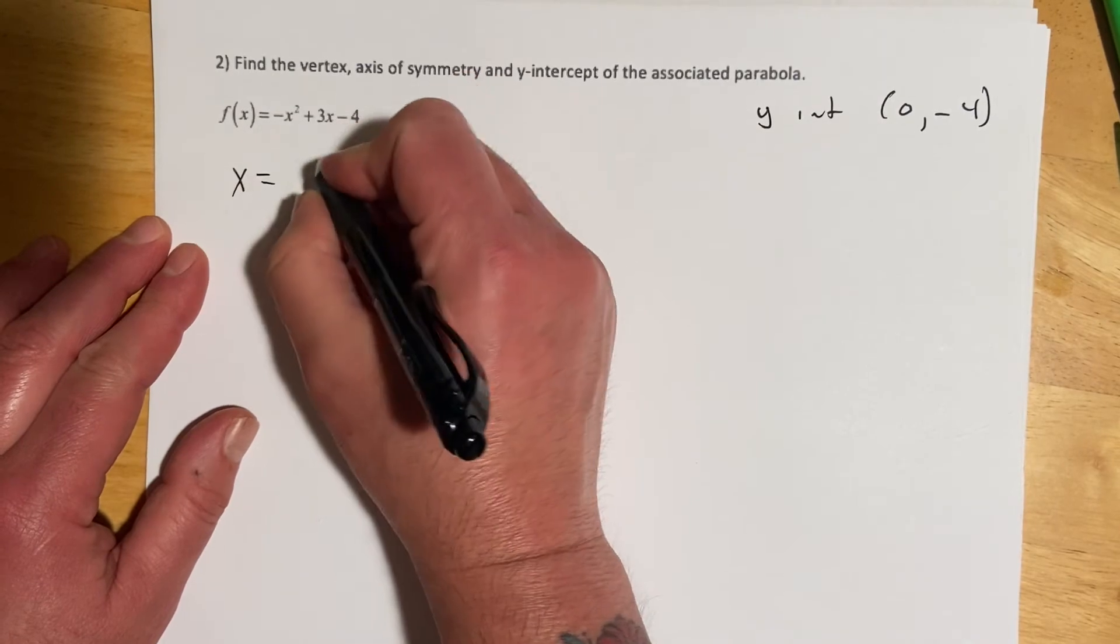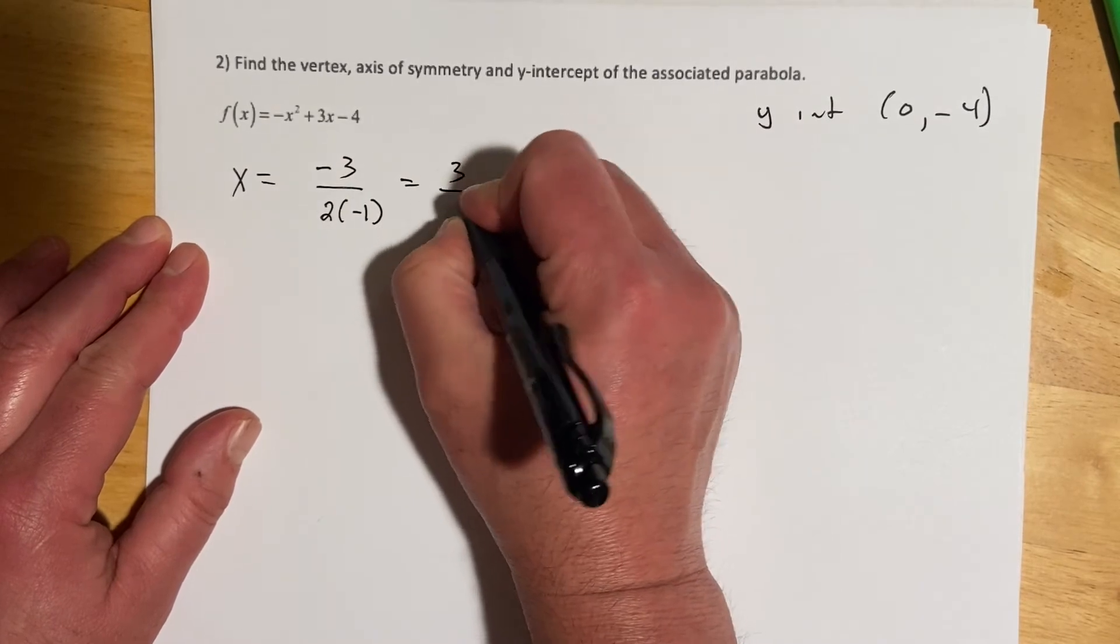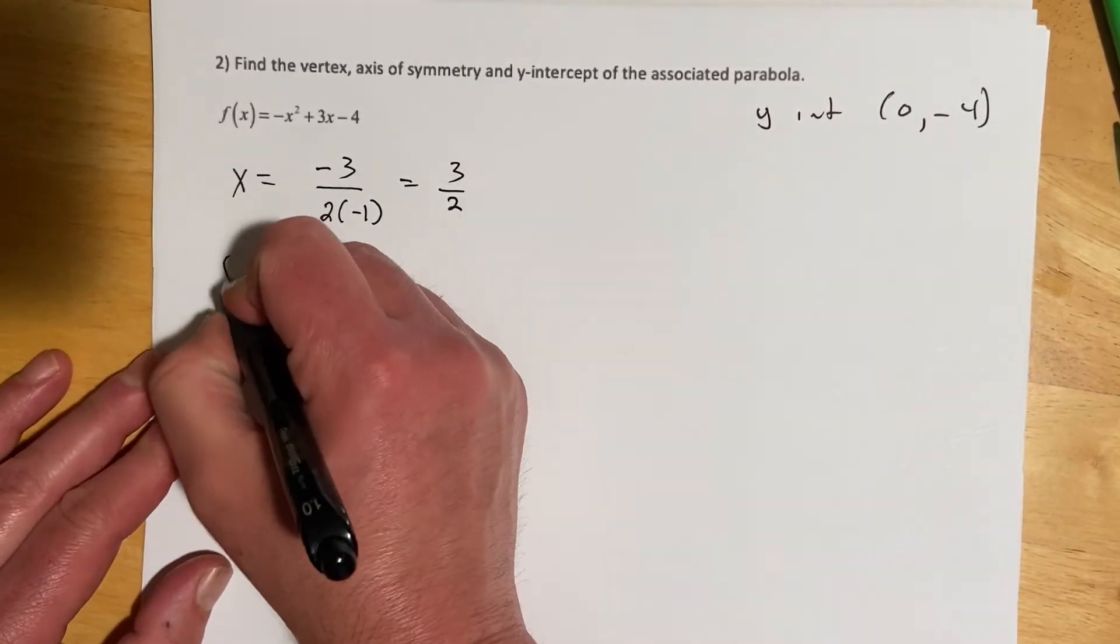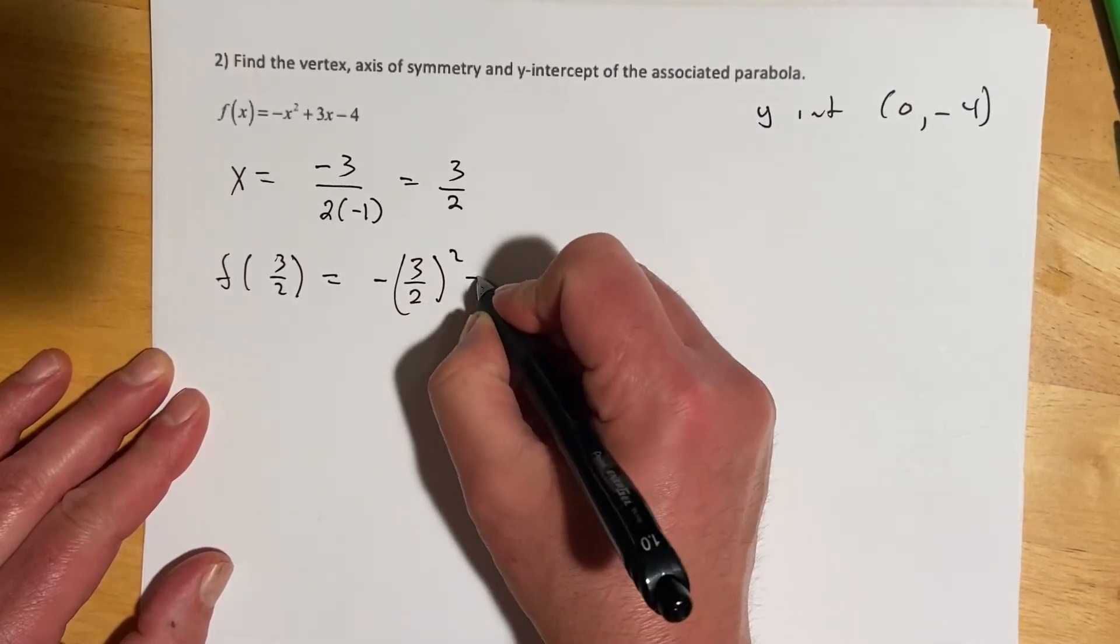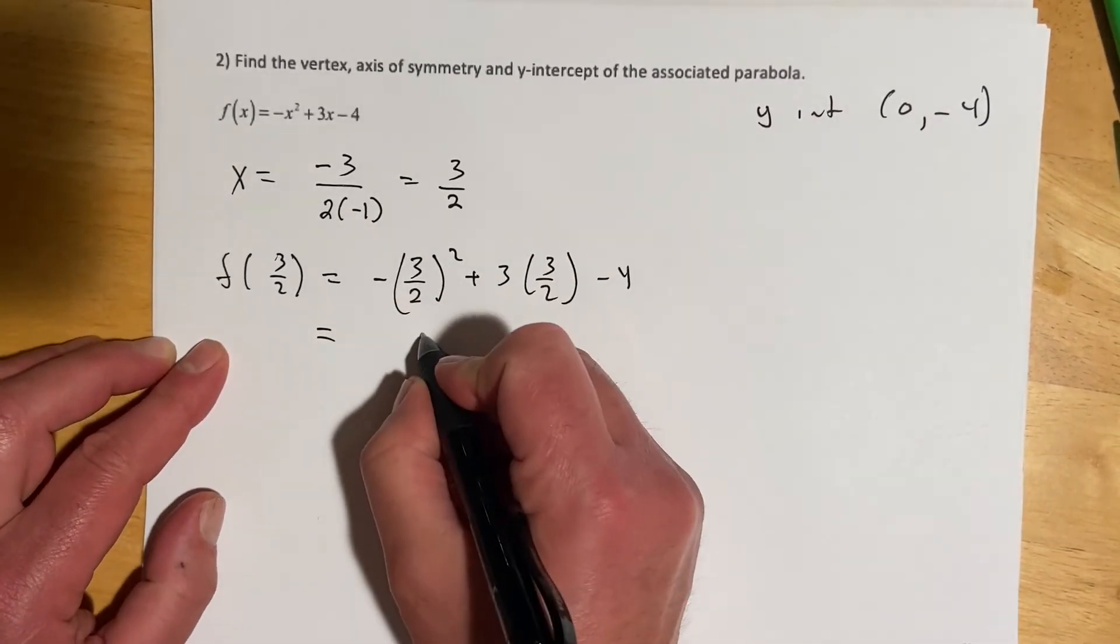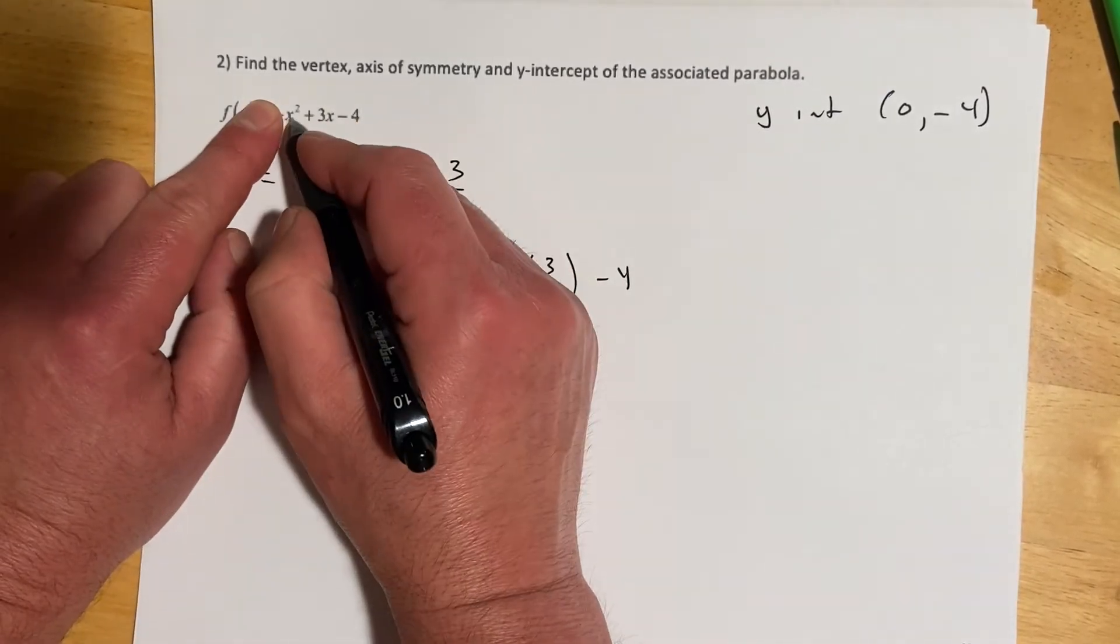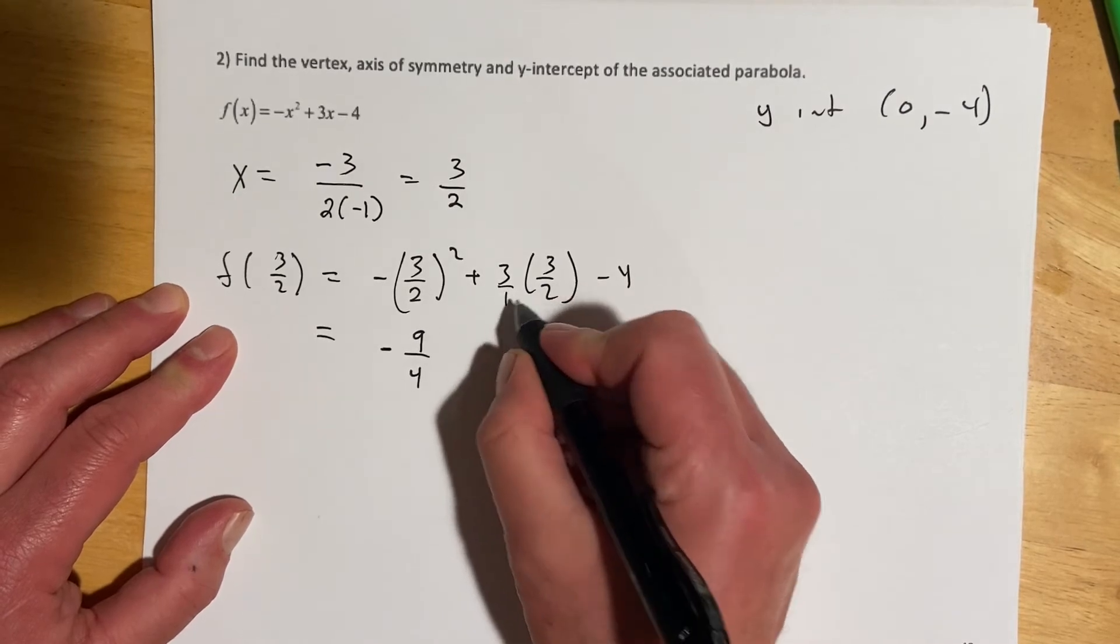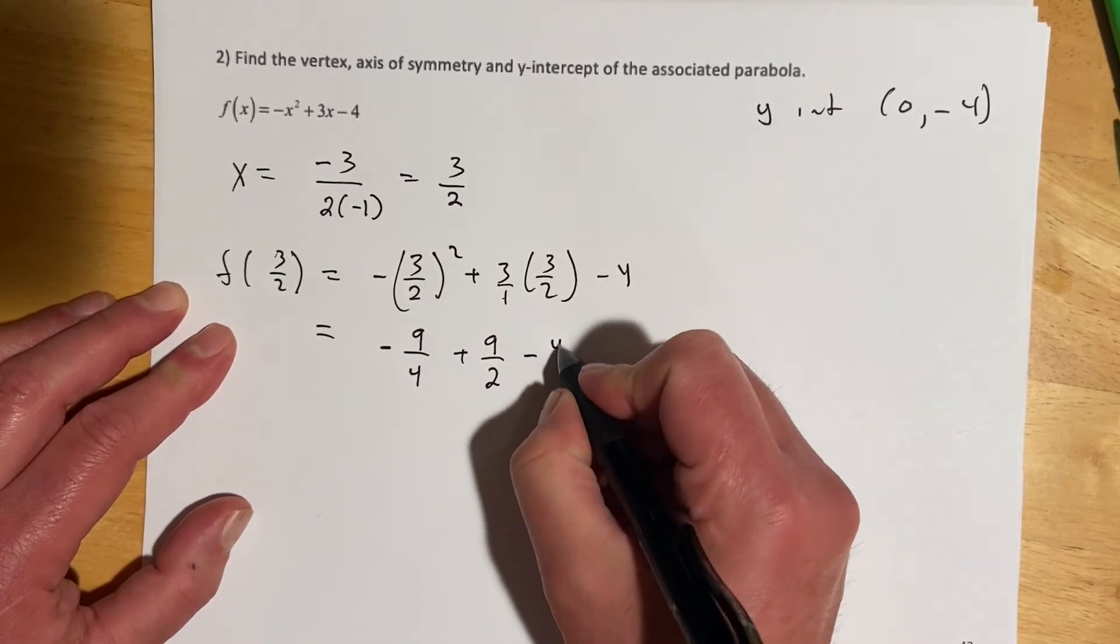So let's go x equals negative b, so negative 3 over 2a. So 2 over negative 1, and that is 3 halves. So our x-coordinate of our vertex is 3 halves. So now we have to find f of 3 halves, which is just not that great, but it's what we got. And so here, this would go 9 fourths and negative, because the negative is in front of the x, so it's squaring and then negating second. 3 times 3, and this is like 3 over 1, so this would be plus 9 over 2, and then minus 4.